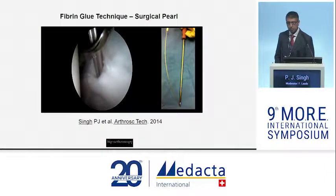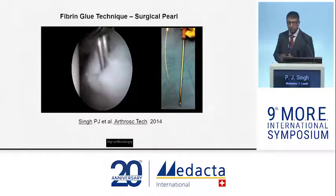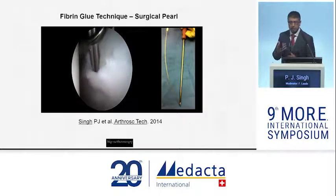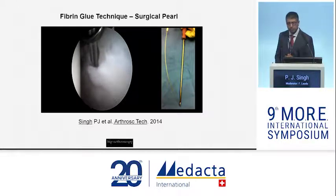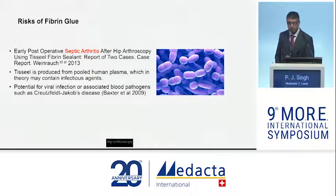Regarding surgical technique: the needle often bends, so you can pre-bend the tip to help guide the fibrin glue in. I also use a rigid curette to guide the needle very precisely, allowing accurate injection without much difficulty. However, fibrin glue is not without risk — there were two case reports of septic arthritis following its use. Fibrin glue comes from pooled human plasma and therefore carries the risk of viral infection, as confirmed by Baxter.